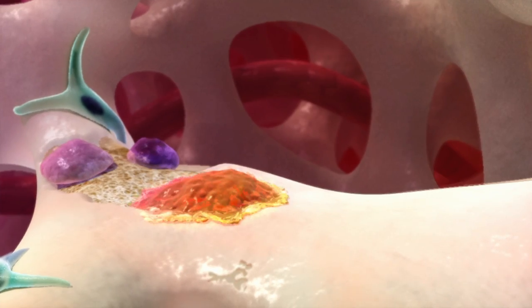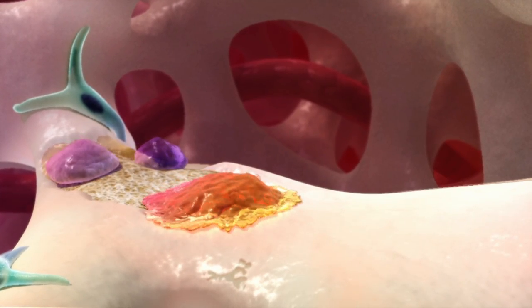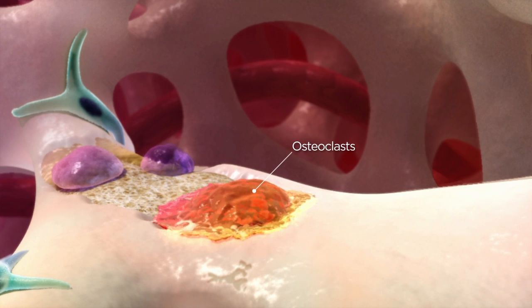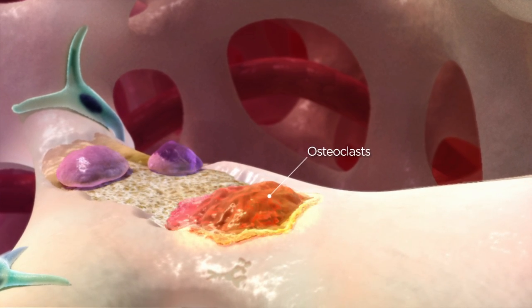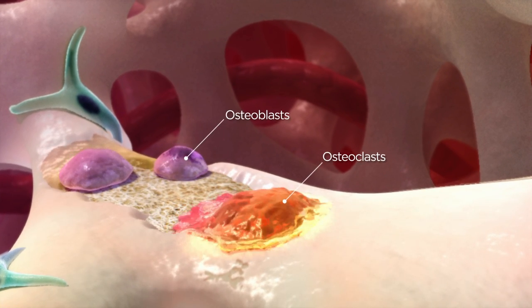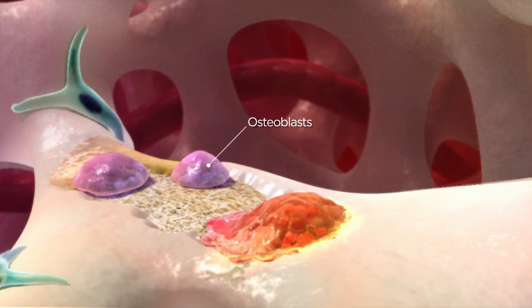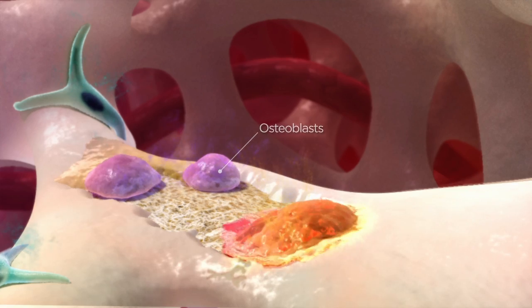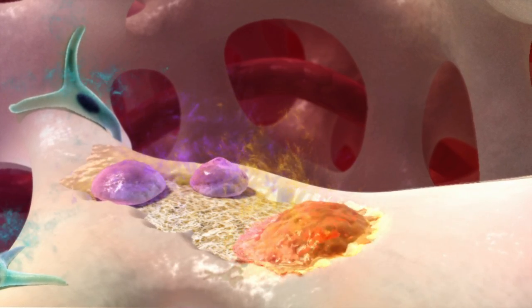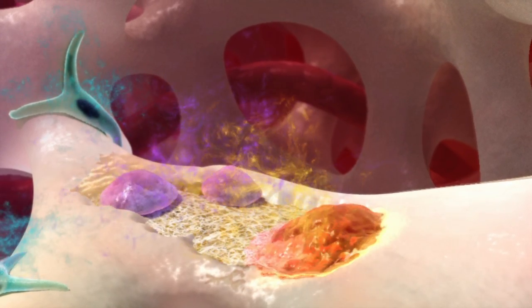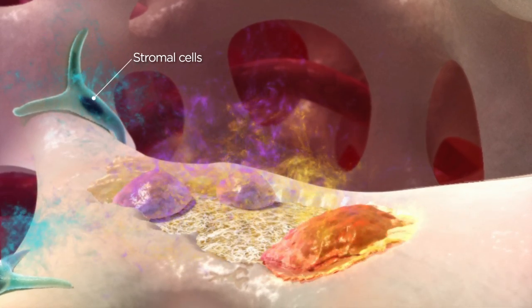Bone remodelling depends on two types of cells called osteoclasts which break down bone and osteoblasts which form new bone. The activity of the osteoclasts and osteoblasts is controlled by chemical signals they and other bone marrow cells such as stromal cells release.